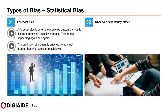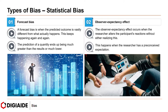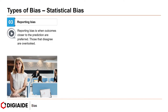Next, observer expectancy effect. The observer expectancy effect occurs when the researcher alters the participants' reactions without either party realizing this. This happens when the researcher has a preconceived expectation. Next, reporting bias. Reporting bias is when outcomes closer to the prediction are preferred, while those that disagree are overlooked.